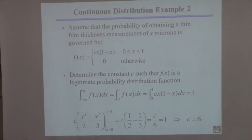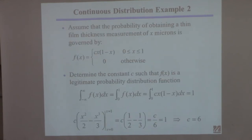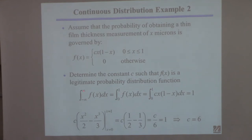I chose this function because I wanted something that had a certain shape. So now I need to find c such that the area under the curve — the integral of this function from minus infinity to plus infinity — is equal to 1. That's equivalent to integrating from 0 to 1, because it's only non-zero on that interval.